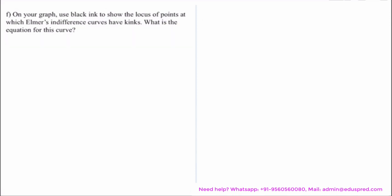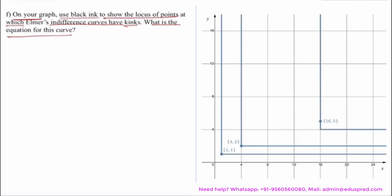Moving on to the next part, it says on your graph, use black ink to show the locus of points at which Elmer's indifference curves have kinks. What is the equation for this curve? So this was the graph we drew in the previous part. Elmer has a utility function of the form u(x,y) equals minimum of x, y squared. And in case of minimum or perfect complements, you have a kink where this value is equal to this value. That means x is equal to y squared.